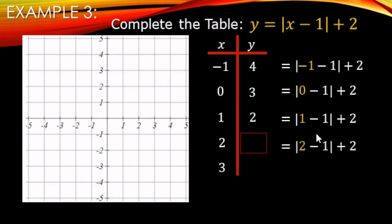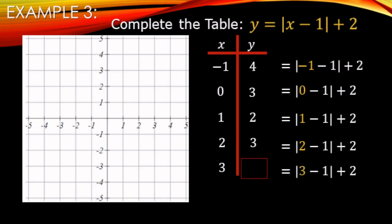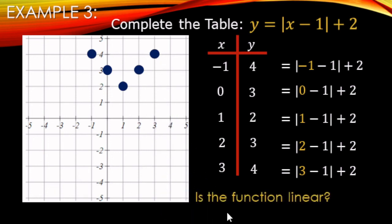For x = 2: 2 minus 1 is 1, absolute value of 1 is 1, plus 2 makes 3. For x = 3: 3 minus 1 is 2, absolute value of 2 is 2, plus 2 makes 4. Table is filled out. Plotting: (-1, 4), (0, 3) on the y-axis, (1, 2), (2, 3), and (3, 4). Does this make a line? No — it looks like a V shape, and absolute value graphs are going to look like V's.